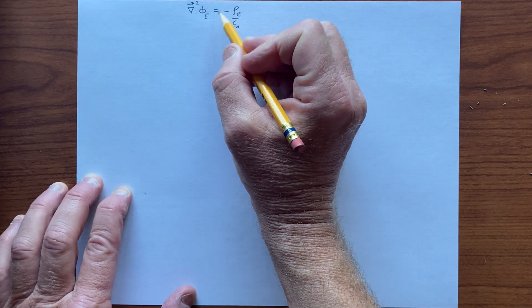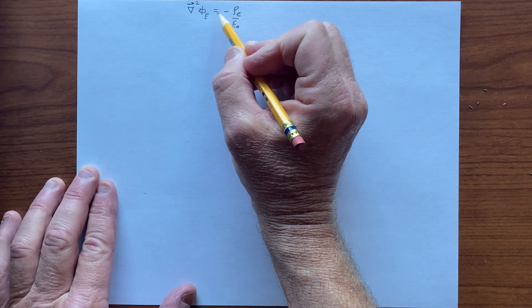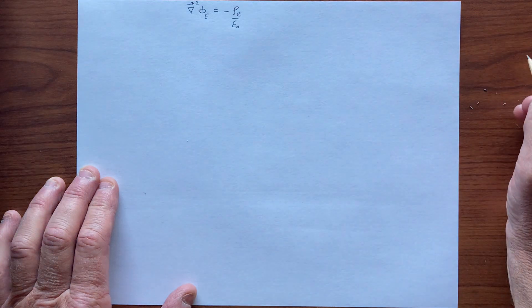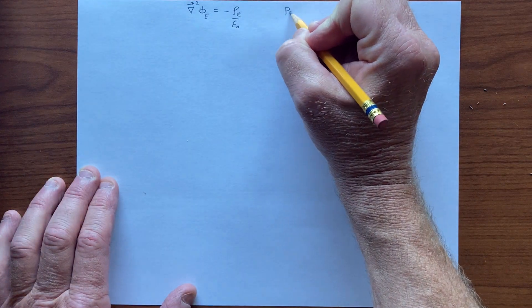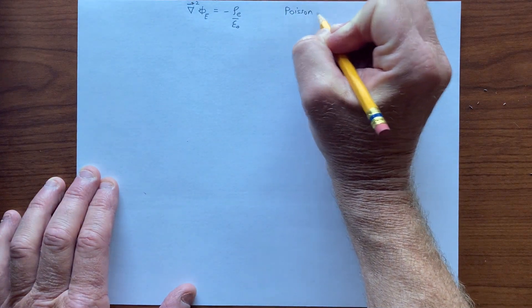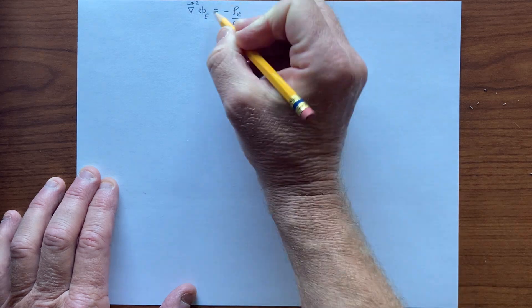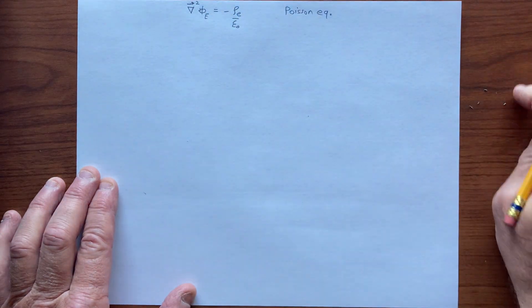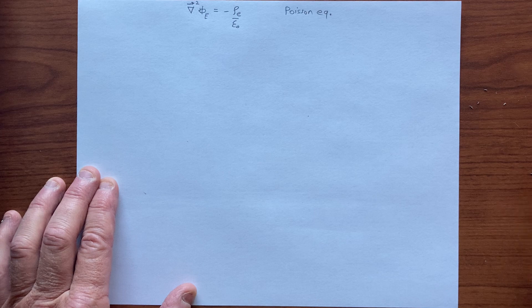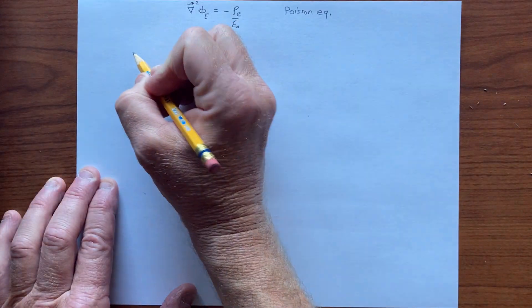We're going to derive an analogous equation for the gravitational field. This is the Poisson equation for electric fields, and now we'll derive the Poisson equation for gravitational fields.